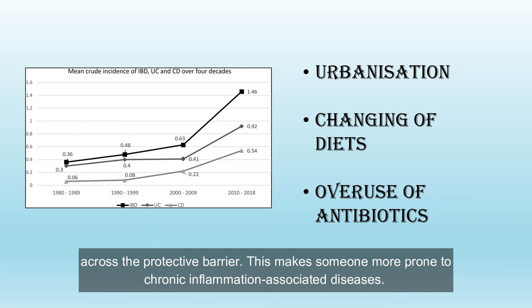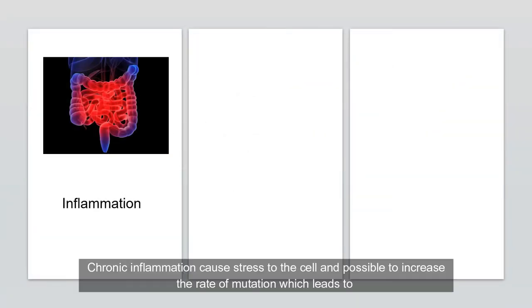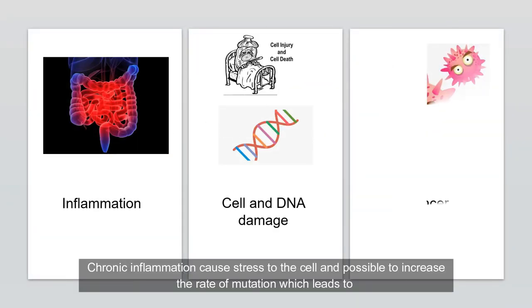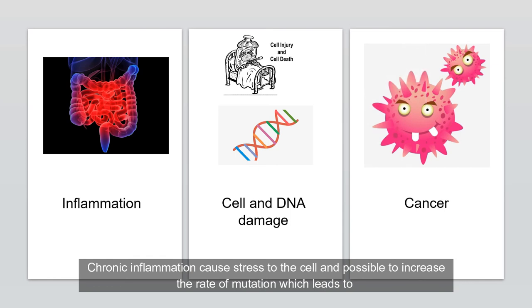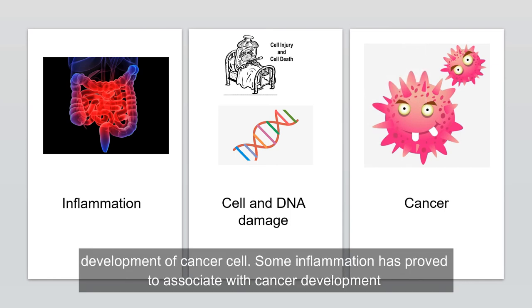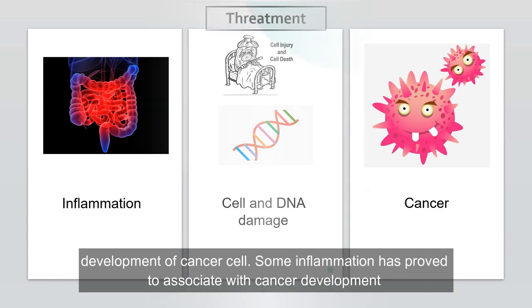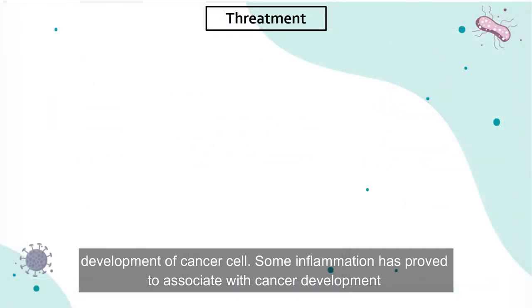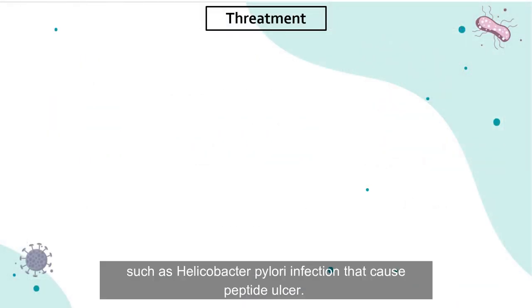This makes one more prone to chronic inflammation-associated disease. Chronic inflammation causes stress to the cell and can increase the rate of mutation, which leads to the development of cancer cells. Some inflammation has been proven to associate with cancer development, such as Helicobacter pylori infection that causes peptic ulcer.